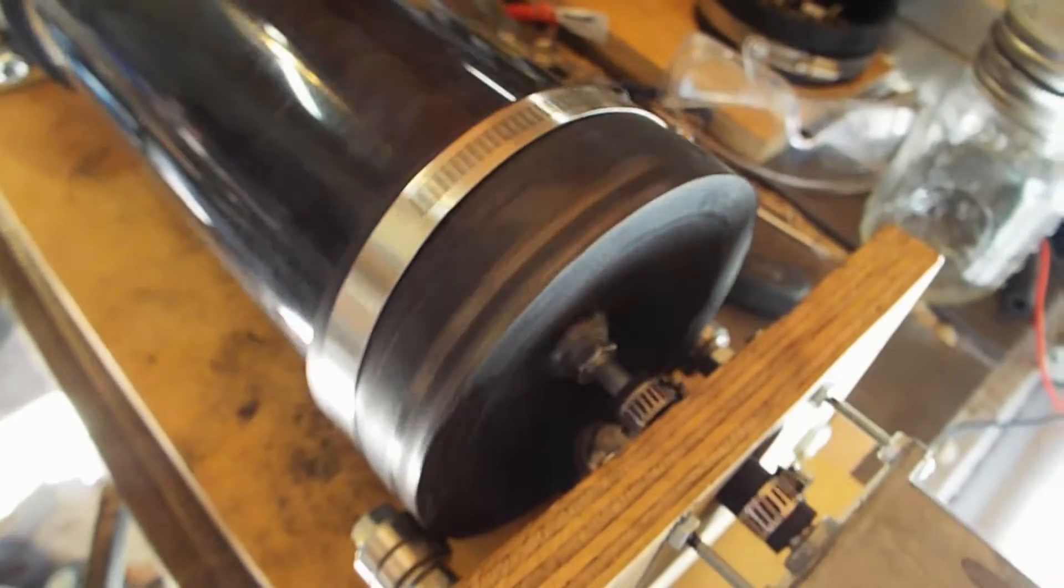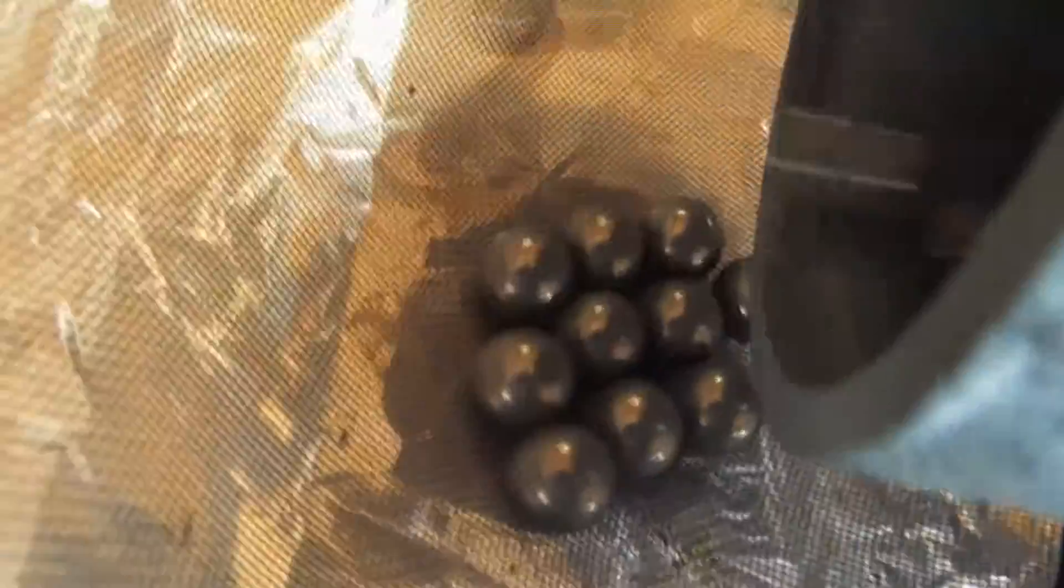So I'm going to go ahead and shut it off and open it up. Okay, so I've opened the ball mill up and I'm going to dump the contents out into this colander so we can sort through it. And there's the aluminum powder.